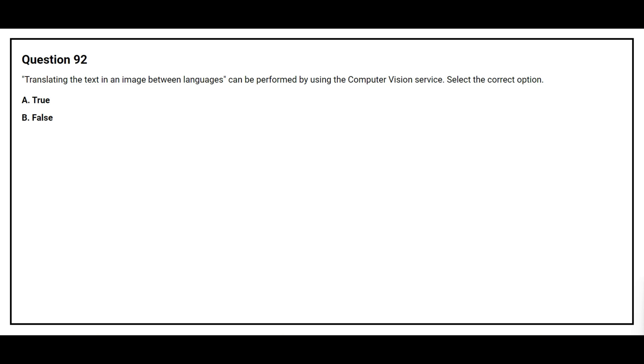Question number 92. Translating the text in an image between languages can be performed by using the computer vision service. Select the correct option. Option A, true. Option B, false. The correct answer is option B, false.